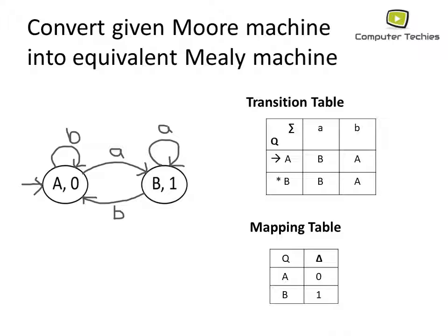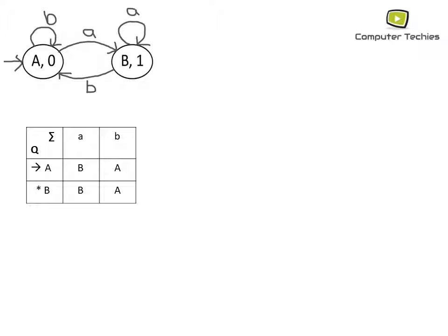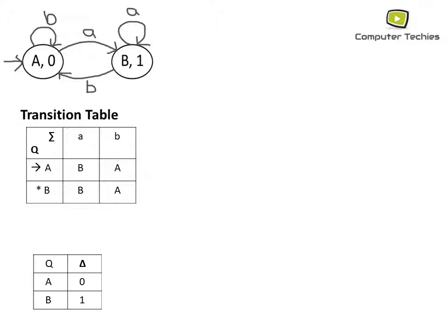After that, we draw the mapping function table with Q and its output lambda. State A has output 0 while state B has output 1. This is our given Moore machine: we have the transition table and the mapping table, and we need all three of these to convert the given Moore machine into a Mealy machine.